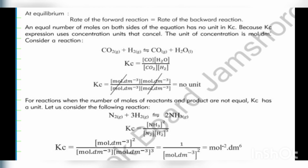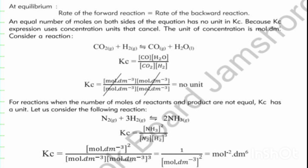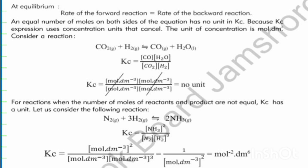At equilibrium, the rate of forward reaction equals the rate of backward reaction. When there are equal numbers of moles on both sides of the reaction equation, Kc has no unit. When we calculate velocity, we know that velocity is the distance covered by a body in unit time — it is the ratio of distance to time.